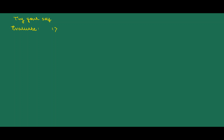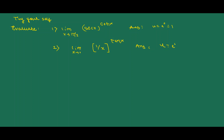Try yourself: First example, limit x tends to π/2 of (sec x)^(cot x). Its answer is u = e^0 = 1. Second example, limit x tends to 0 of (1/x)^(tan x). Its answer is also u = e^0 = 1.